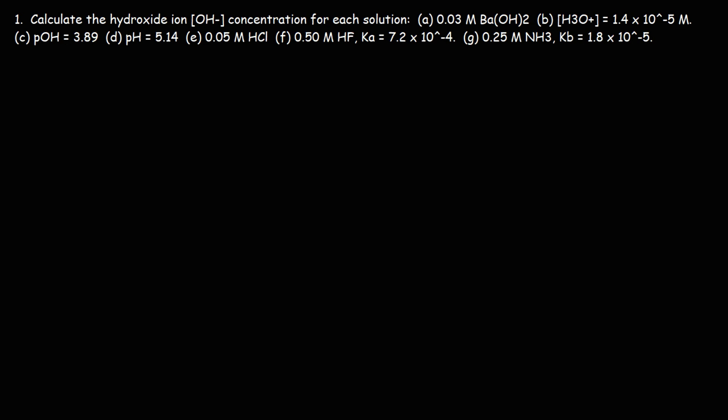In this lesson we're going to talk about how to calculate the hydroxide ion concentration for different solutions. Let's focus on part A. We're given a solution of barium hydroxide and the concentration is 0.03 M. What is the concentration of hydroxide in the solution?